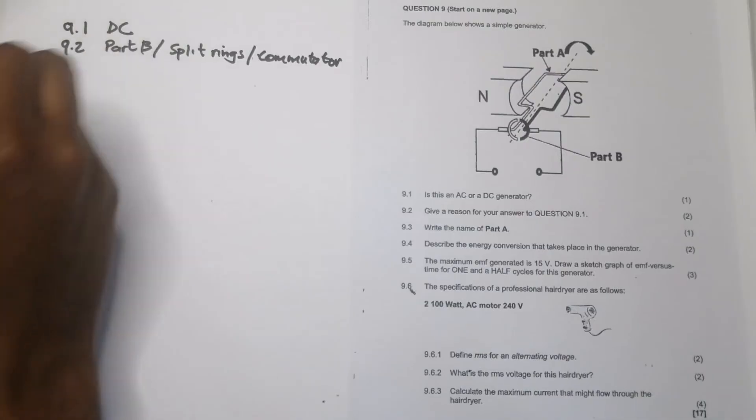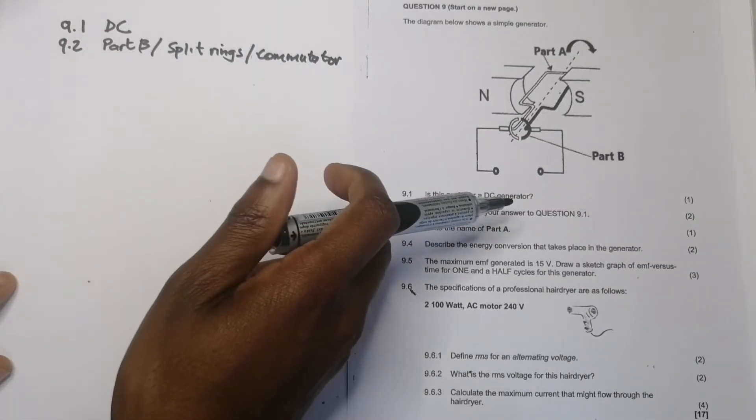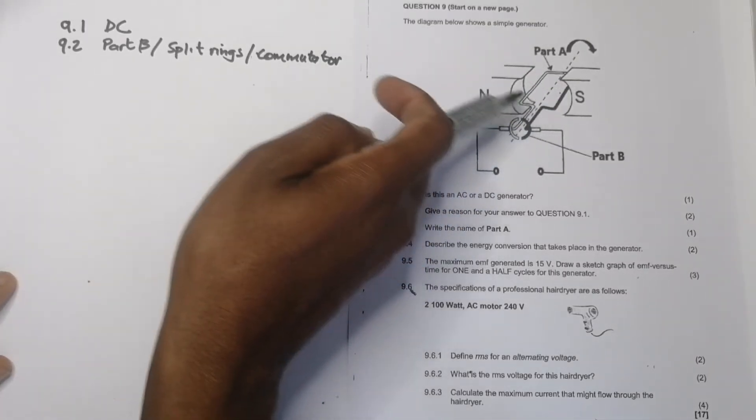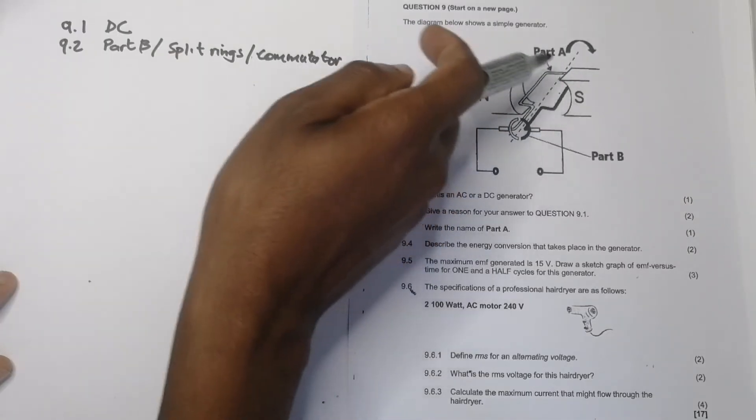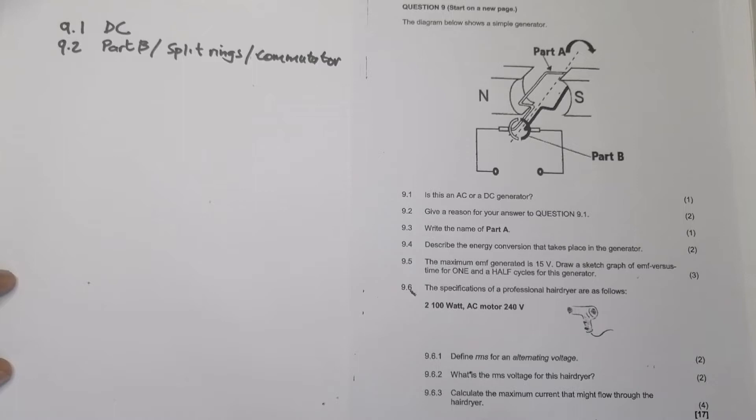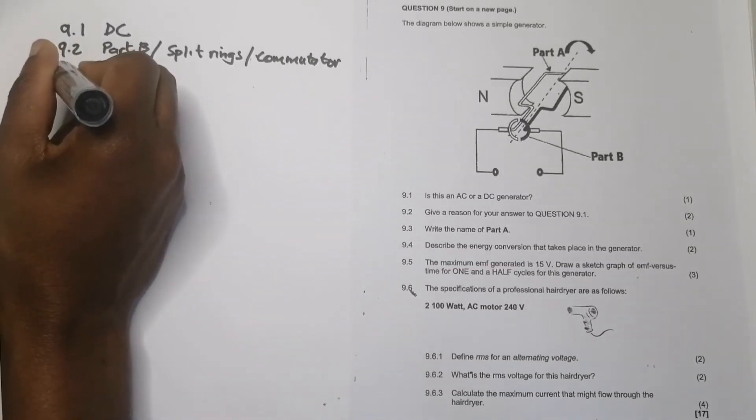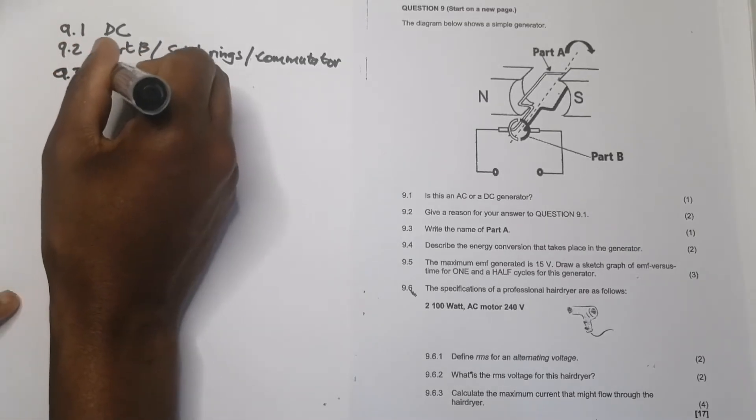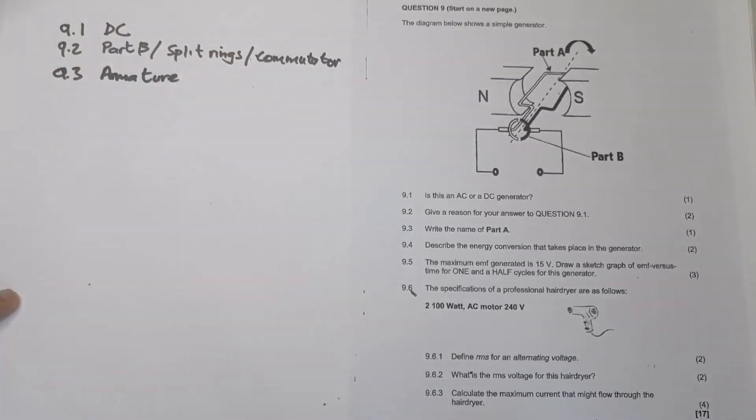Either one of that you can use as an answer, and then they say write down the name of part A, which is this guy over here. We call it the armature. This is the part that rotates, in some instances they do even call it the rotor, but I prefer the name armature.